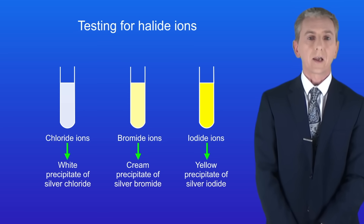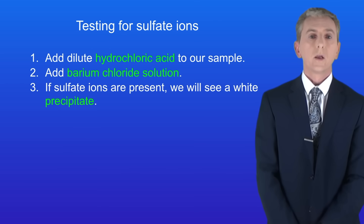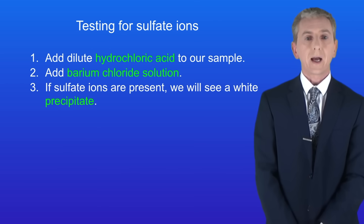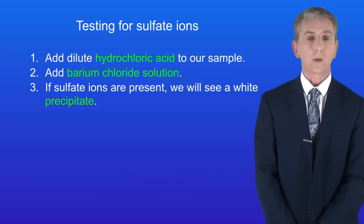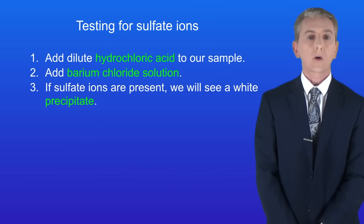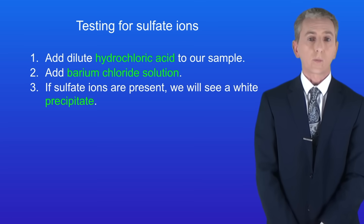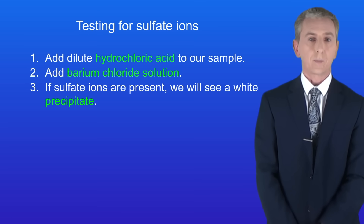The final test is for the sulfate ion. First we add dilute hydrochloric acid to our sample. We then add barium chloride solution. If sulfate ions are present we'll see a white precipitate.